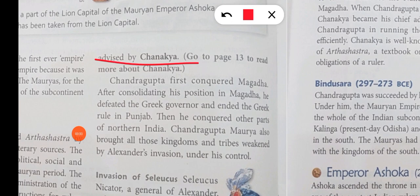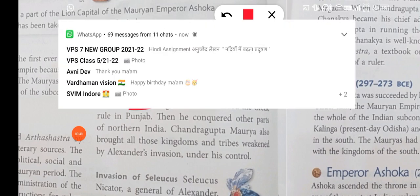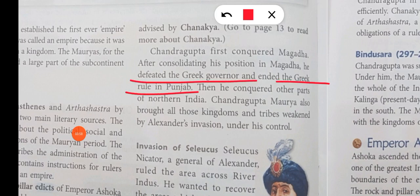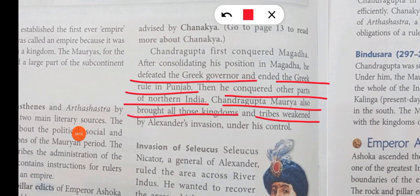Chandragupta first conquered Magadha, then consolidated his position. He then defeated the Greek governor and ended Greek rule in Punjab. He also conquered other parts within India. Chandragupta Maurya brought all those kingdoms and tribes weakened by Alexander's invasion under his control.